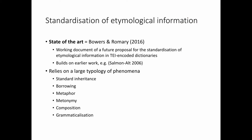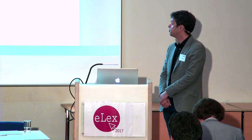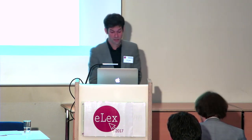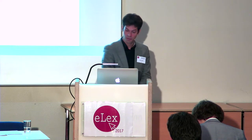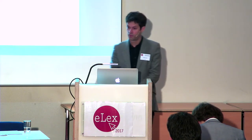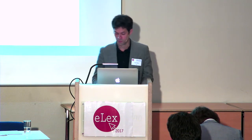As far as related work is concerned, there are two things I'd like to mention. The first is work by Bowers and Romari on standardization of etymological information in dictionaries. They published a draft with proposals for standardization of etymological information in TEI-encoded dictionaries, building on earlier work by Salmon Alt (2006). Their propositions rely on a large typology of etymological relation types that includes standard inheritance, borrowing, but also metaphor, metonymy, composition, and grammaticalization — which goes a little beyond what we'll be dealing with today.